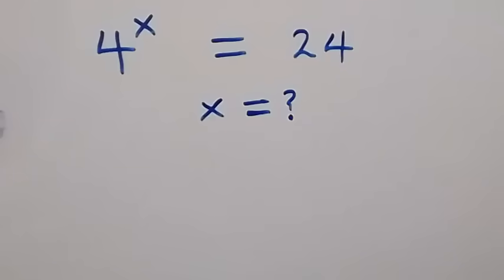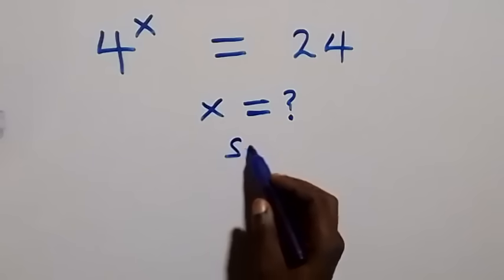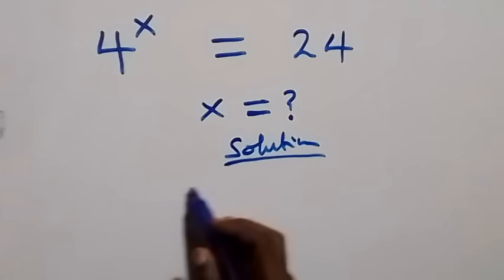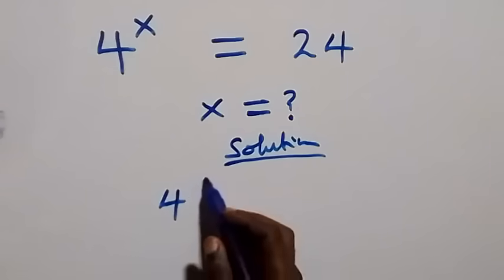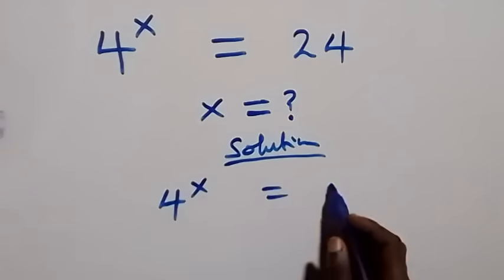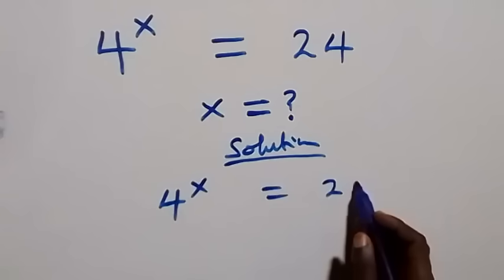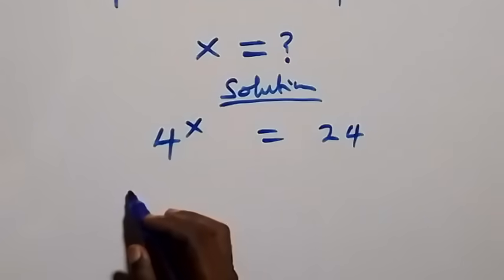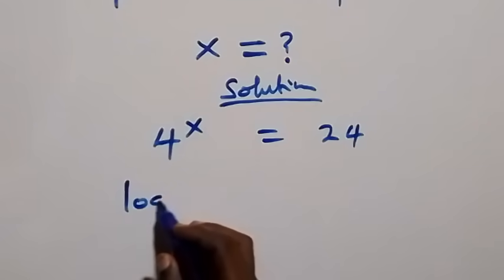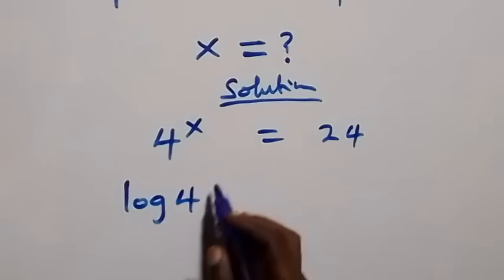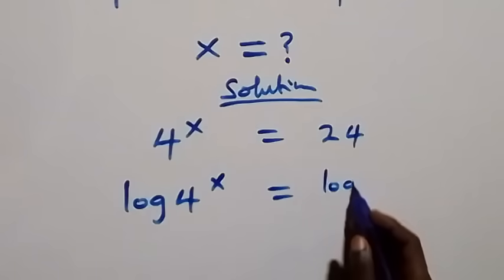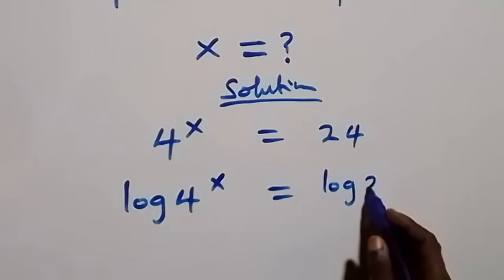Hello, you're welcome. We're going to solve this exponential equation. What we are given is 4 raised to the power x equals 24. Let's take the log on both sides: log of 4 raised to power x equals log 24.